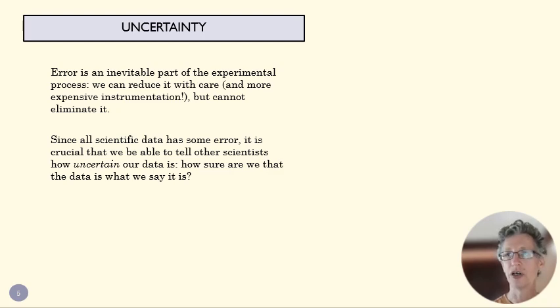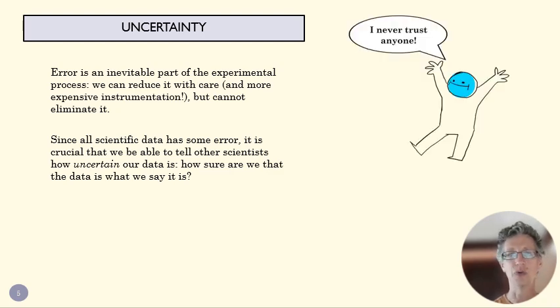And we want to turn that into an actual value so that we can say, how sure are we about what our data is? So we can tell other scientists, I think the value is 10 kilograms, but it could be 9.9 or it could be 10.1. That's a kind of way of being honest about our data. And that's what an uncertainty calculation is for.